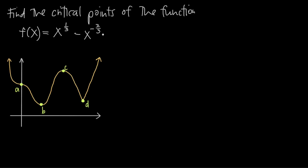Before we go any further, we need to talk about critical numbers versus critical points. Sometimes you'll see it written both ways. Oftentimes people use critical numbers to refer to potential critical points — values of x where the function may change direction — versus critical points where we've confirmed that the function does change direction at that particular point.